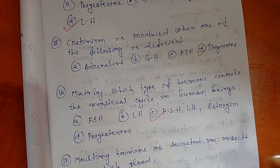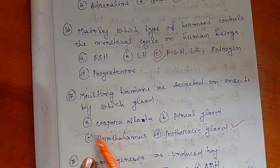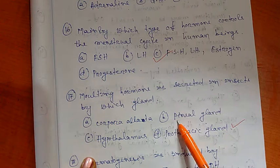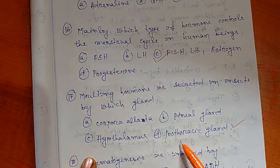Question number 17: Molting hormone is secreted in insects by which gland? There are four options: A) Corpora allata, B) Pineal gland, C) Hypothalamus, D) Prothoracic gland. So the right option is D, prothoracic gland.